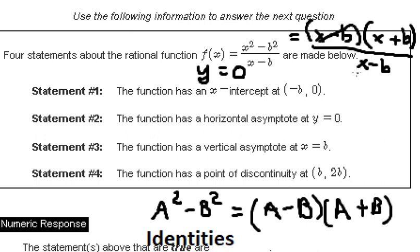So this one and this one they cancel, so we have y equals x plus b. But we put y equals zero, so we put zero here. That means we have x equals negative b. So statement number one is correct.